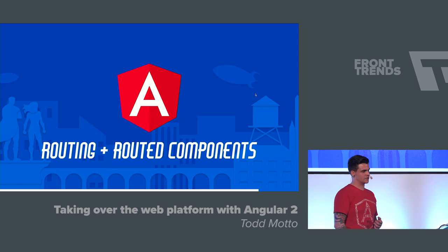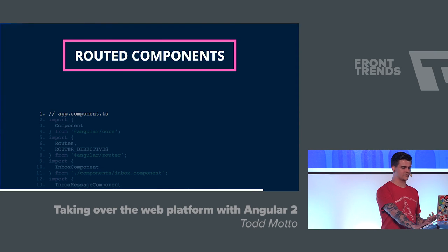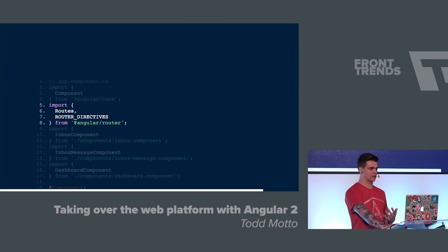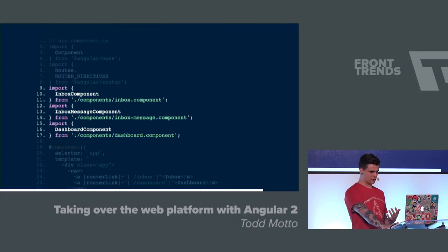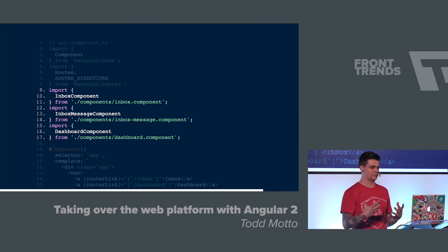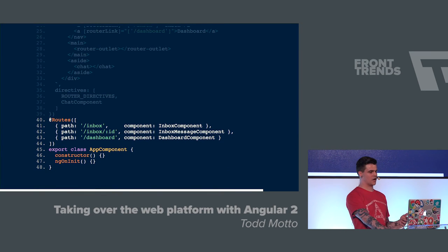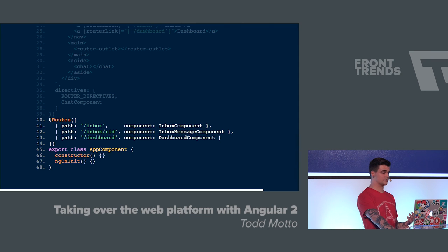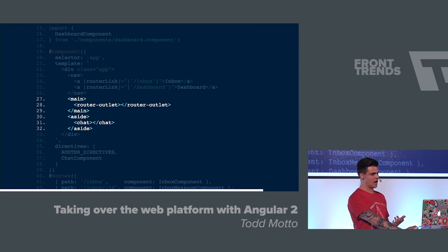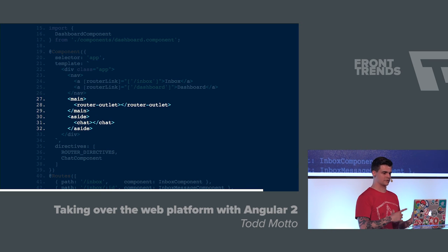Almost there. Routing and routed components. We looked at the three types: stateful, stateless, and routed. This allows us to import route definitions as a decorator in Angular core. We import InboxComponent, InboxMessageComponent, and DashboardComponent — completely made up but fitting our component. Then we set up routing to route to these particular components. We can inject router directives — a router outlet, which is basically the view container — allowing us to swap in these different components with different views.